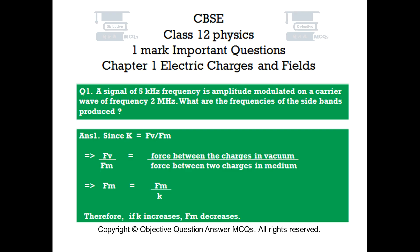Question number 1. A signal of 5 kHz frequency is amplitude modulated on a carrier wave of frequency 2 MHz. What are the frequencies of the side bands produced?